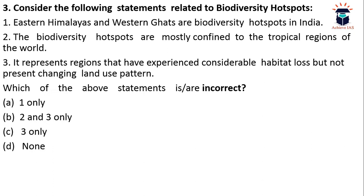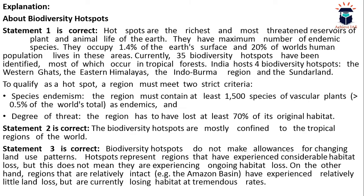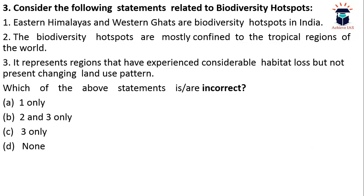Next question: consider the following statements related to biodiversity hotspots. First, Eastern Himalayas and Western Ghats are biodiversity hotspots in India. Second, biodiversity hotspots are mostly confined to the tropical regions of the world. Third, they represent regions that have experienced considerable habitat loss but not a present changing land use pattern. The question asks which statements are incorrect. The answer is D — none — meaning all are correct.